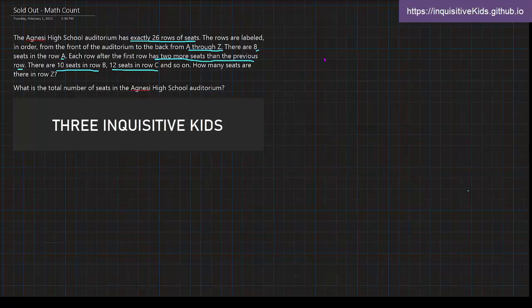So, anyway, let's get to this. The Agnese High School Auditorium has exactly 26 rows of seats. The rows are labeled in order from the front of the auditorium to the back from A through Z.